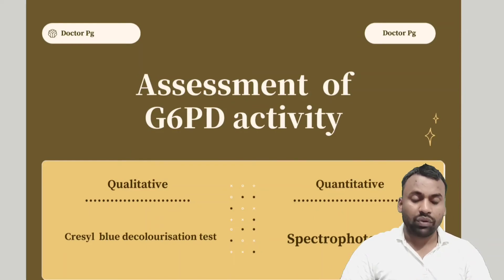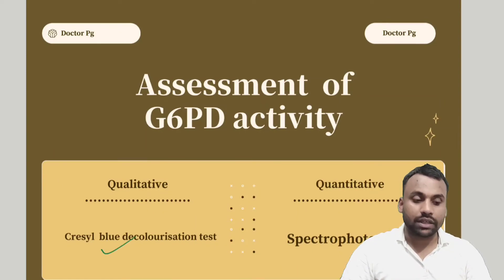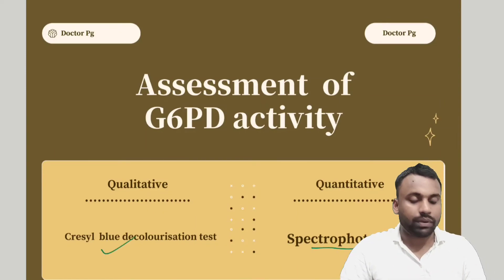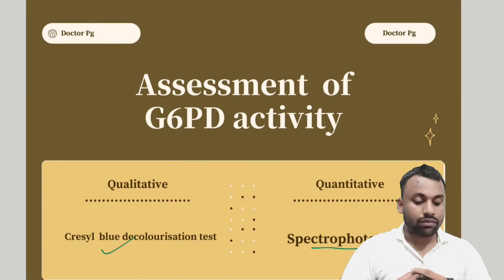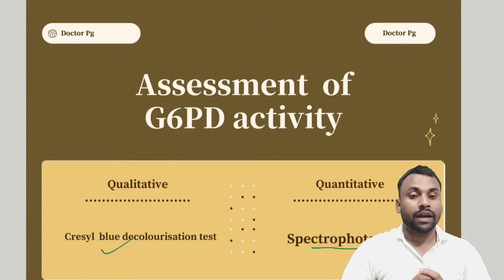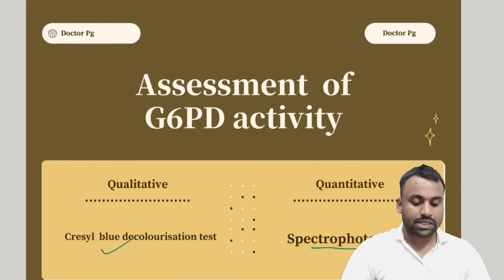For the assessment of G6PD activity, we can use several qualitative and quantitative tests. For qualitative assessment, we use the crystal violet decolorization test and spectrophotometry. More detailed information on qualitative and quantitative tests can be found in further resources.